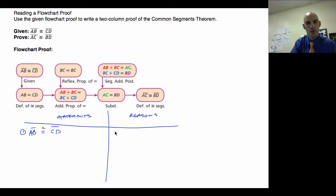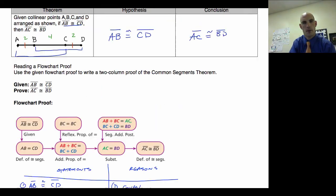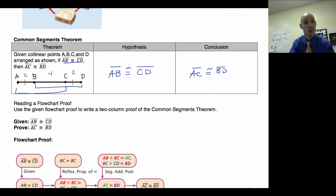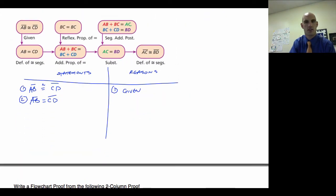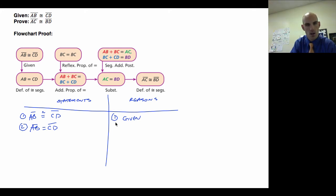And my first statement is going to say AB is congruent to CD. That's my first step on my chart, and my reason is right below that. It's given. My second one is going to follow from that. So the arrow tells me what follows from what. So I'm going to say AB is equal to CD. If I'm looking back up at my picture here, AB and CD are equal. Well, that makes sense. They're congruent. Definition of congruent segments.